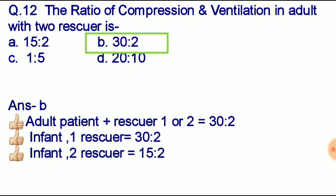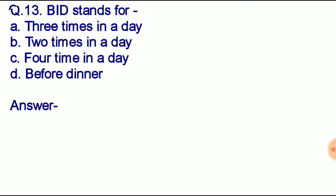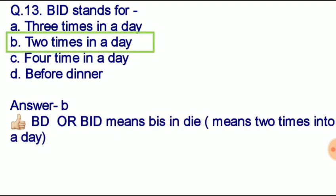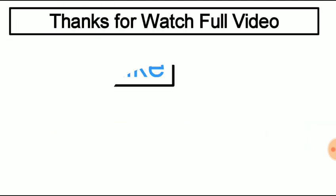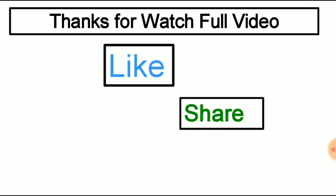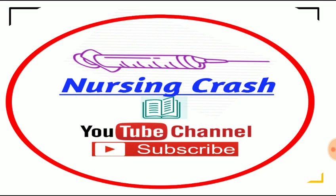Question number thirteen: BID stands for — option A: 3 times a day, option B: 2 times a day, option C: 4 times a day, option D: before dinner. Correct answer: option B, 2 times a day. BD or BID means 'bis in die,' meaning two times a day. Thanks for watching the full video. Please like, share, and subscribe to our channel.